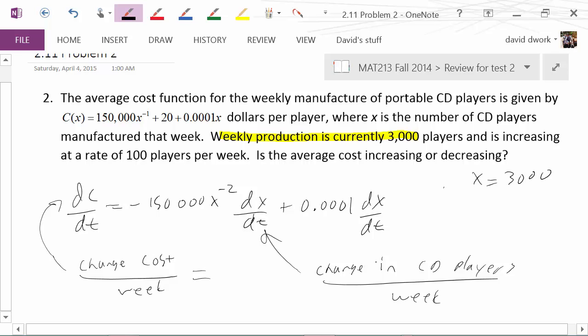Now all we need to fill in the right hand side is dx/dt, the change in CD players per week. Let's see if we can hunt that down. It is increasing at a rate of 100 players per week. There it is. So therefore we know dx/dt equals 100. We're ready to start filling stuff in.